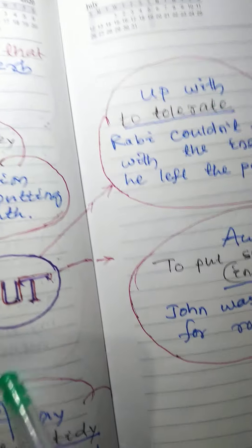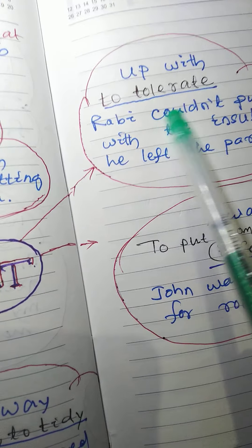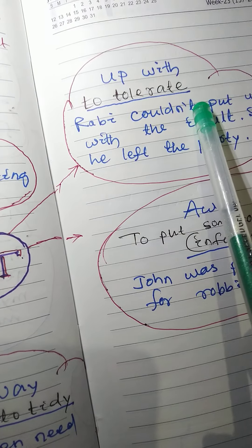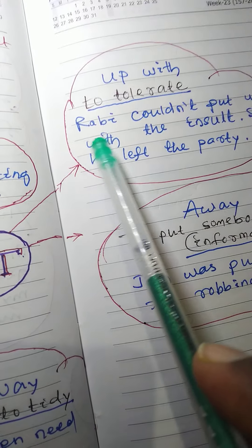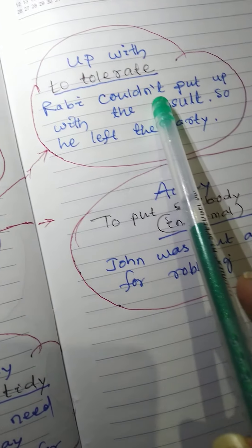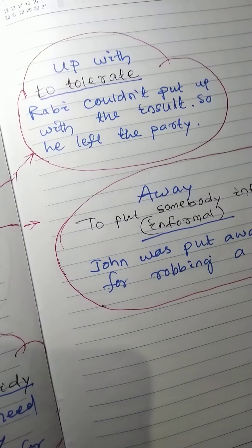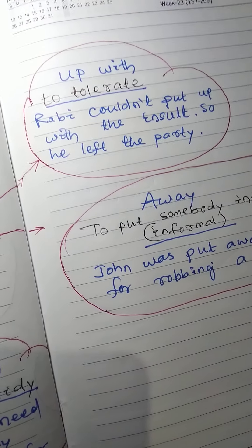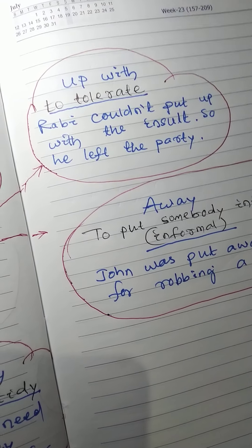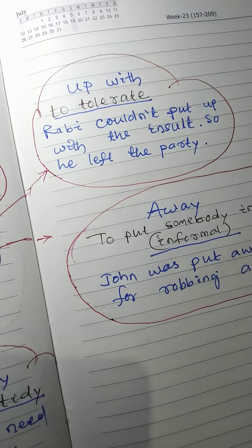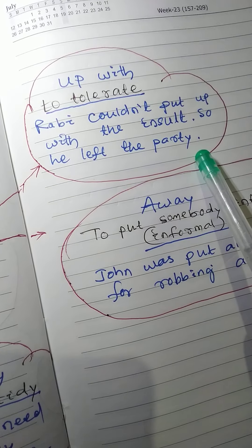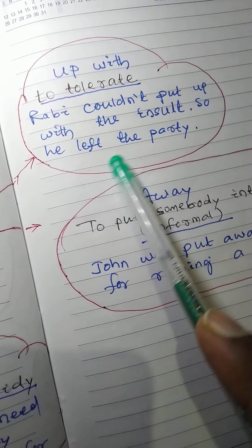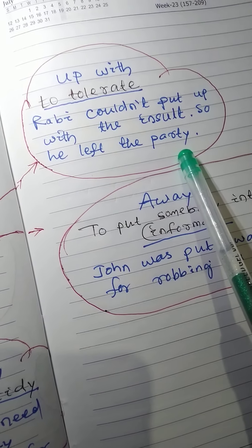First: 'put up with' — that means to tolerate. Example: Robbie could not put up with the insult, so he left the party.